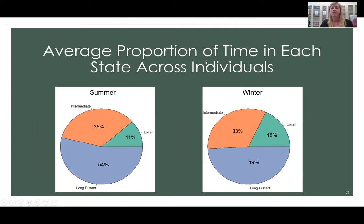We examined the average proportion of time spent in each state across individuals. During the summer, there is a higher proportion of time spent in long-distance movements and a very short amount of time in localized movements. In the winter, the proportion of time in localized movements increases while the proportion in long-distance movement decreases from summer, and intermediate movements are pretty similar between summer and winter.